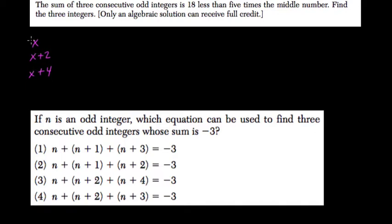For example, I can start with 1 and then I would add 2 to get 3 and then add 4 to 1 to get 5. 1, 3, and 5 are three consecutive odd integers.